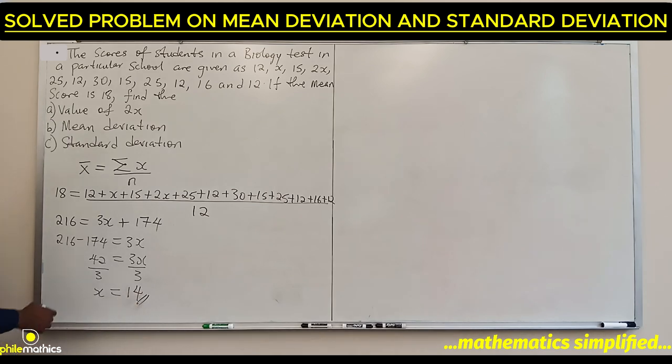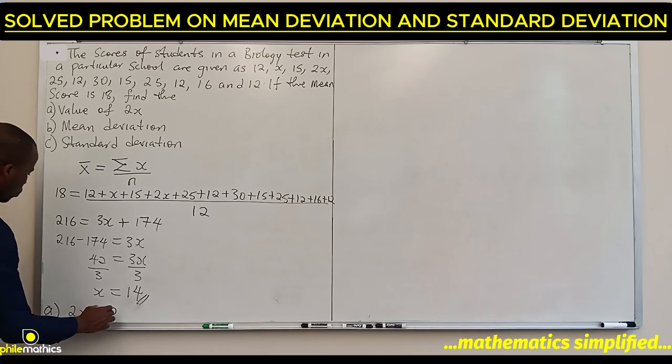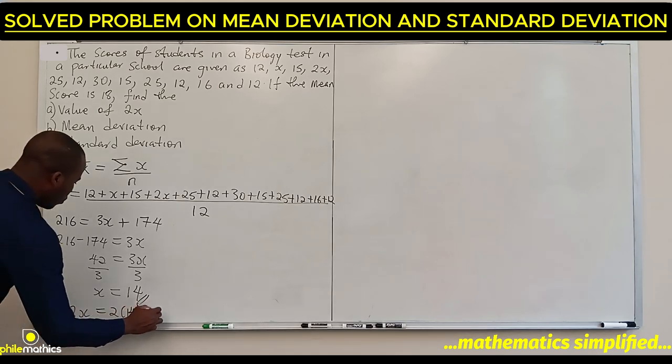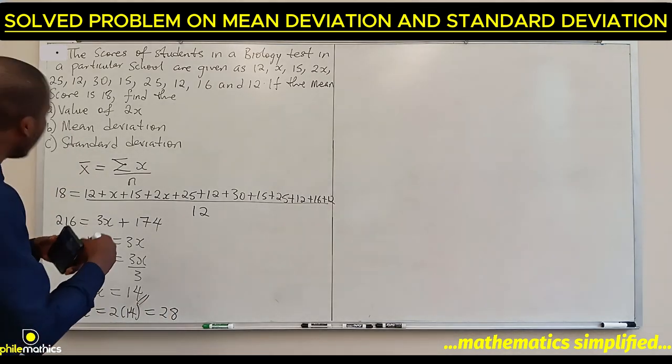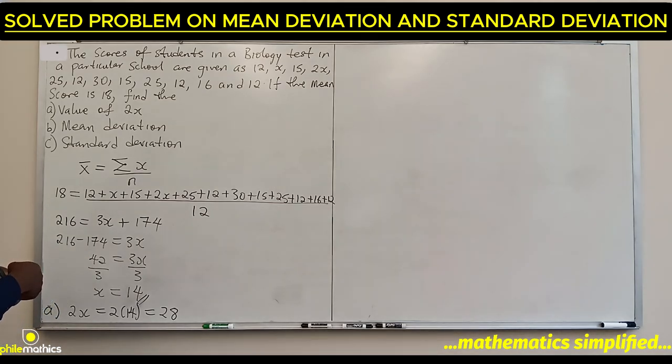We have that x is 14. So part a, which is the value of 2x, will be 2 times 14, which is 28. Next, we will look for the mean deviation and the standard deviation. We have to draw a table.